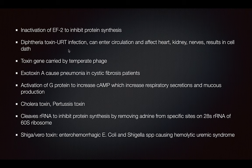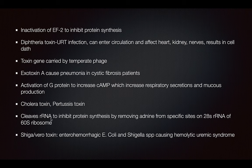The diphtheria toxin causes upper respiratory tract infection, and that can enter the circulation and affect all of these organs — it's carried by a temperate phage. Exotoxin A is going to cause pneumonia in cystic fibrosis patients — important to remember. The activation of the G protein will increase cAMP, which will increase respiratory secretion and mucus production, and that's done by the cholera toxin along with the pertussis toxin. The pertussis bacteria will cause whooping cough. These toxins cleave the rRNA to inhibit protein synthesis by removing adenine from specific sites.